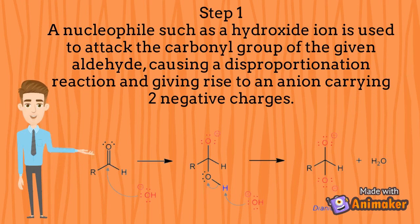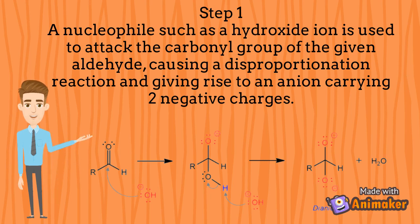Step Number 1: A nucleophile such as a hydroxide ion is used to attack the carbonyl group of the given aldehyde, causing a disproportionation reaction and giving rise to an anion carrying two negative charges.